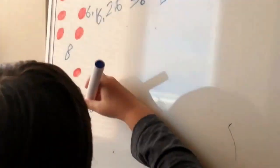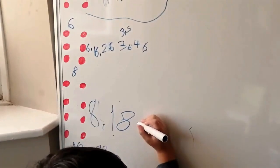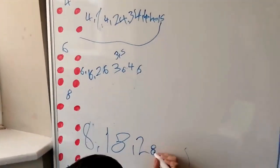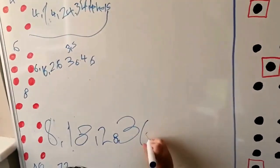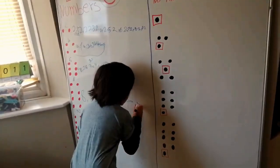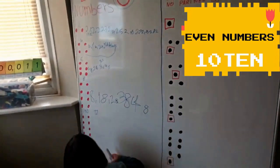Eight, then eighteen, then twenty-eight, thirty-eight, forty, yeah, now forty-eight, yeah. Next one is ten.